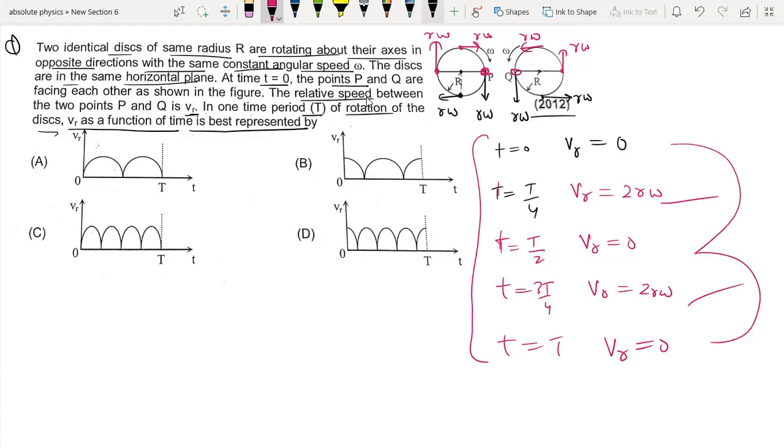So if you look at the graph, a maximum of two times and zero three times - option number A is correct.